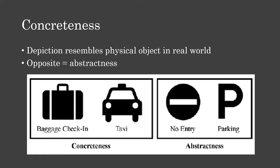The first property is concreteness. A pictogram is regarded as concrete if it depicts something physically resembling the real world, and those that do not are considered abstract. Concrete pictograms would be something like a picture of luggage for baggage check-in or a picture of a taxicab for taxicab. Pictograms that are more abstract would be like the no entry sign or the parking sign, because those things do not actually exist in the world.